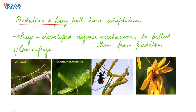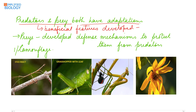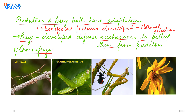Both predators and prey have adaptations — beneficial features developed through natural selection. Prey develop defense mechanisms to protect themselves from predators. One such example is camouflage, where an animal cryptically colors itself so predators cannot detect it. For example, a stick insect resembles a twig so that the predator cannot find it, and a grasshopper resembles the green color of a leaf.